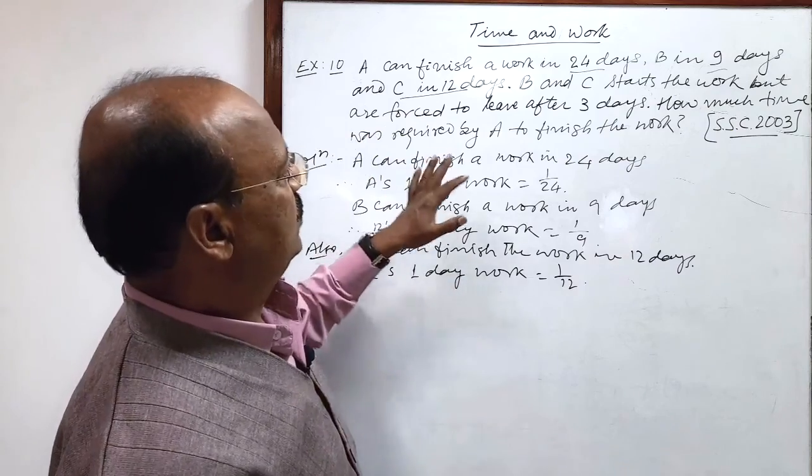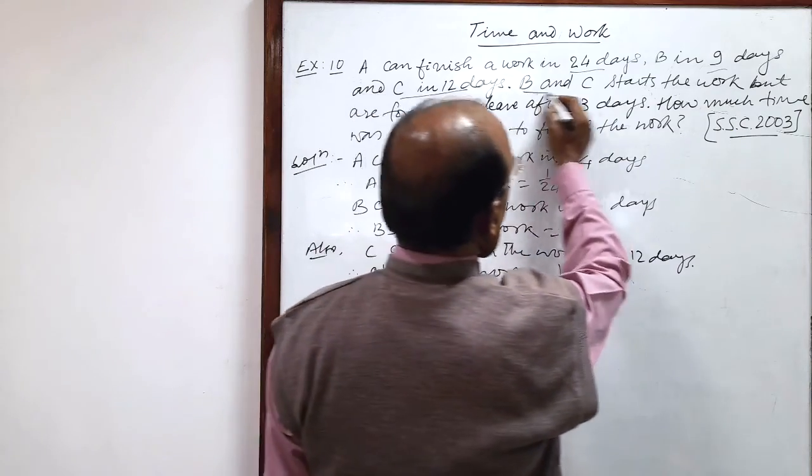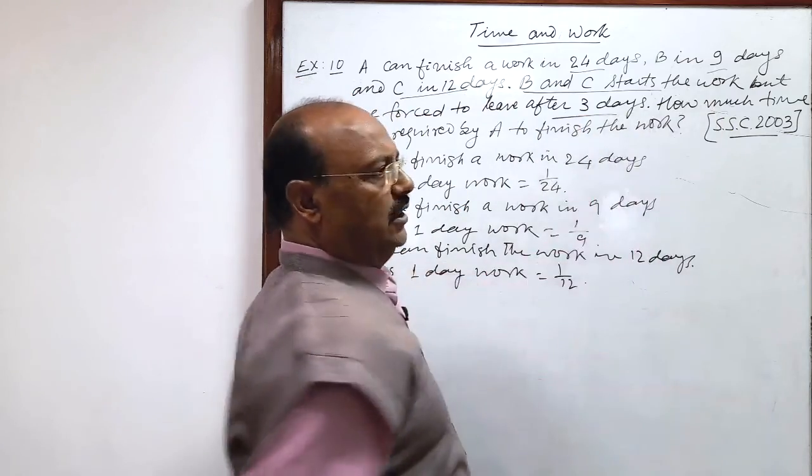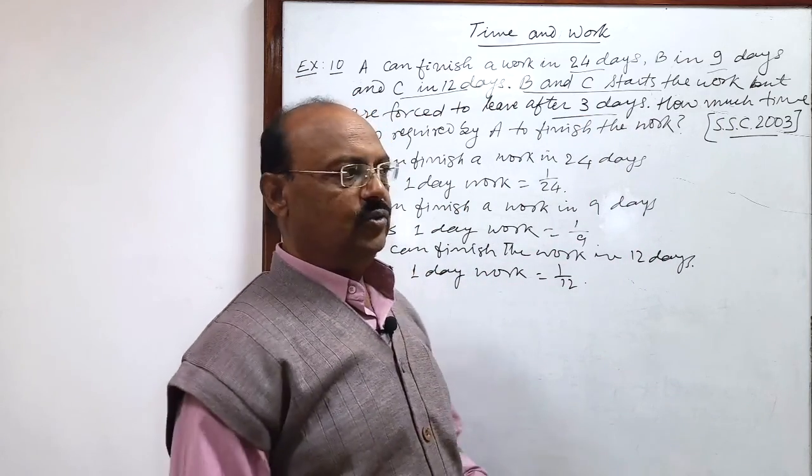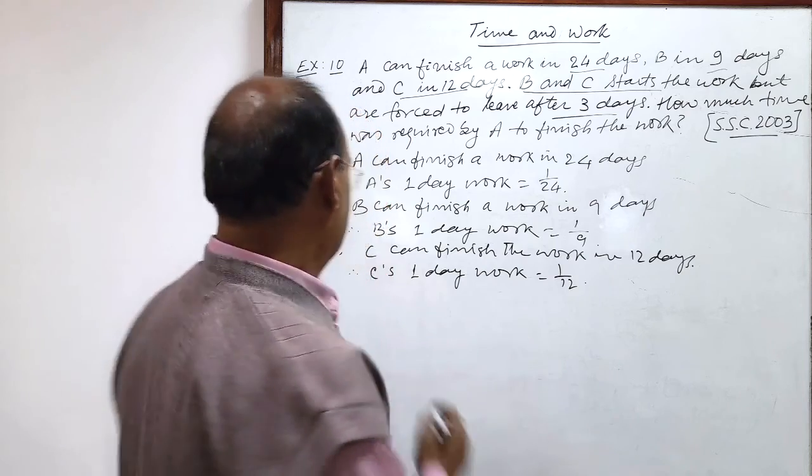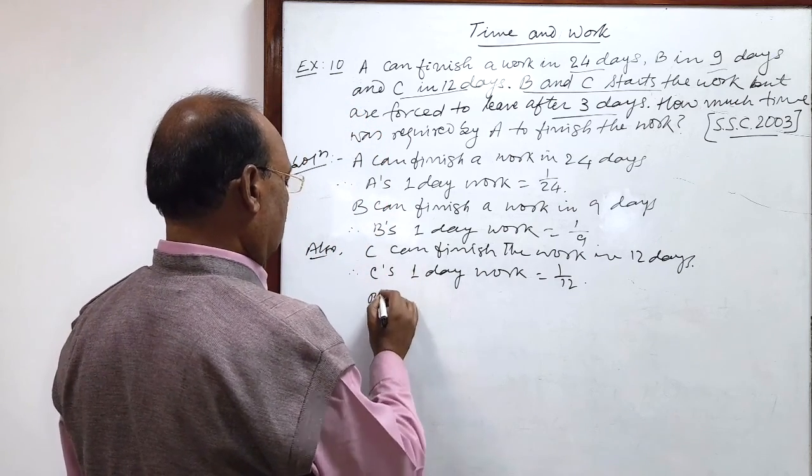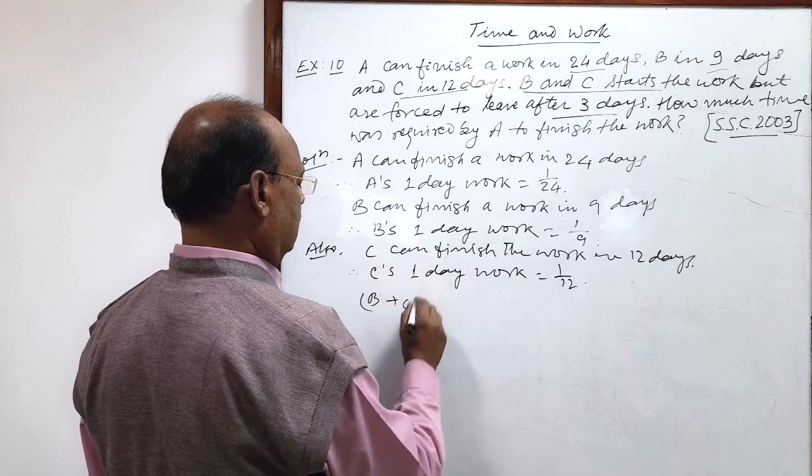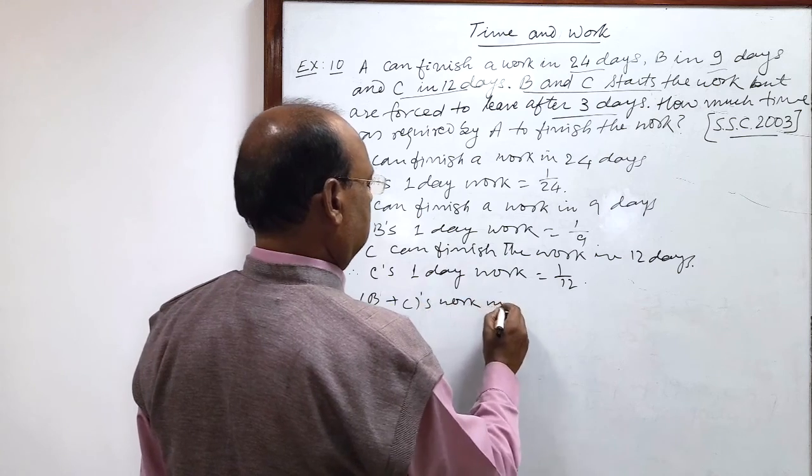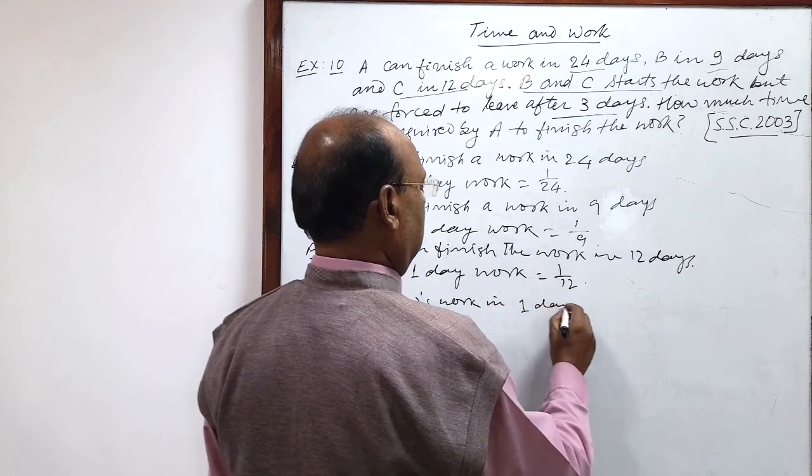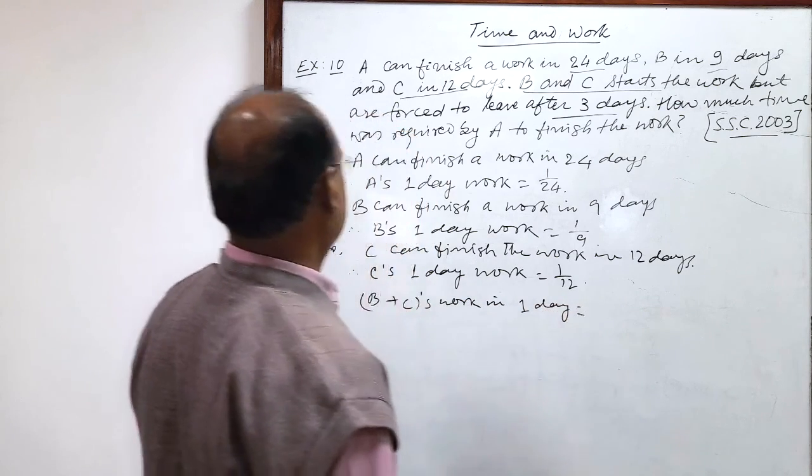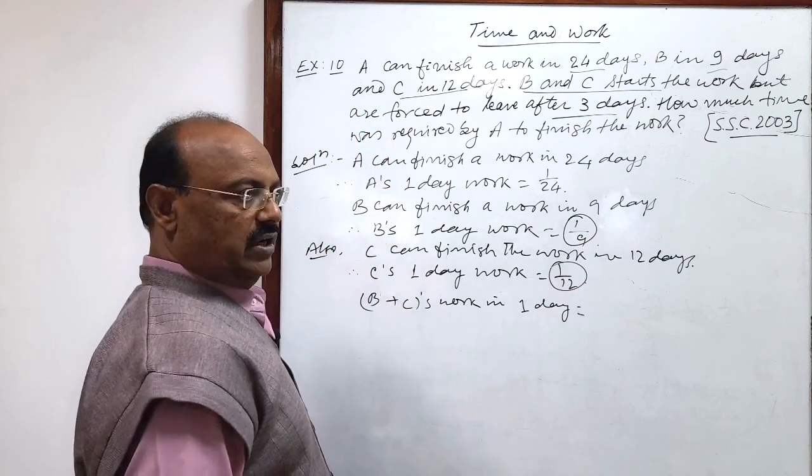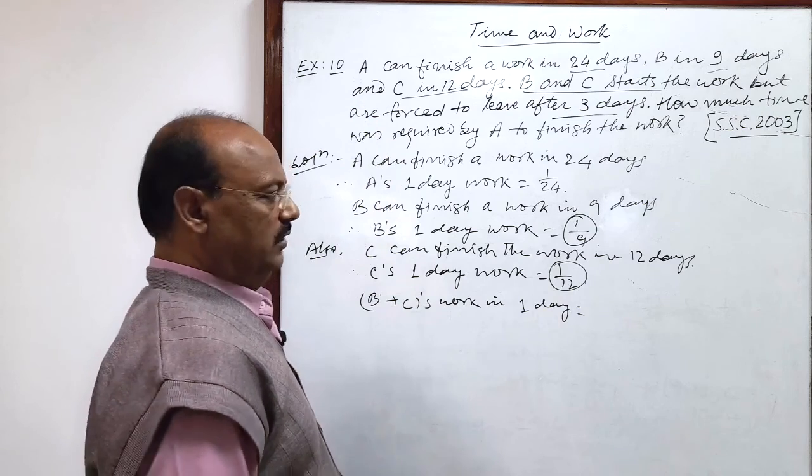Now, you see the condition which is given. B and C start the work but are forced to leave after 3 days. B and C are working together for 3 days. So, B plus C work in 1 day, let us add these two numbers: 1 by 9 and 1 by 12, work done by B and C in 1 day respectively.